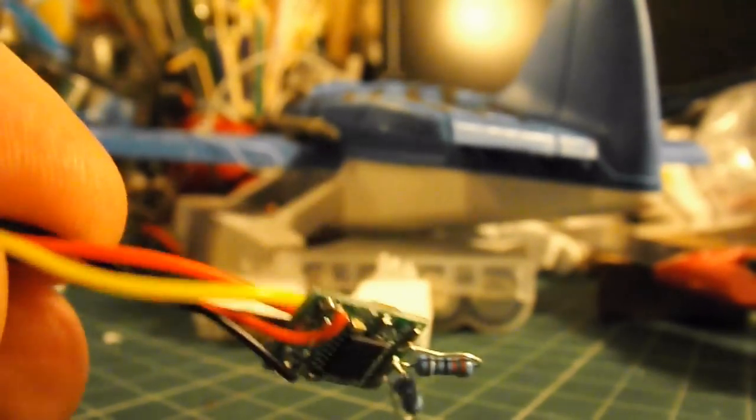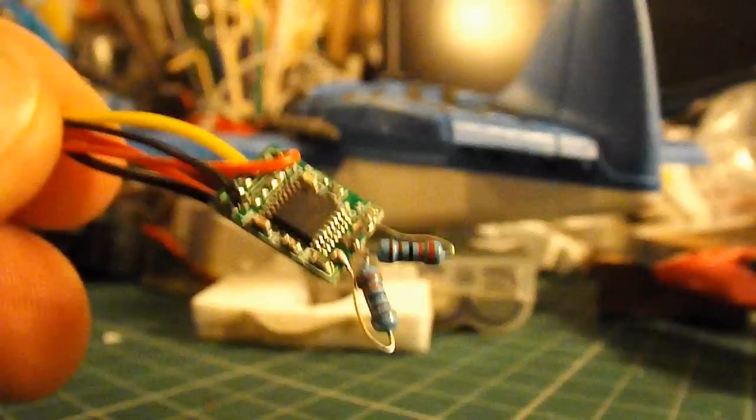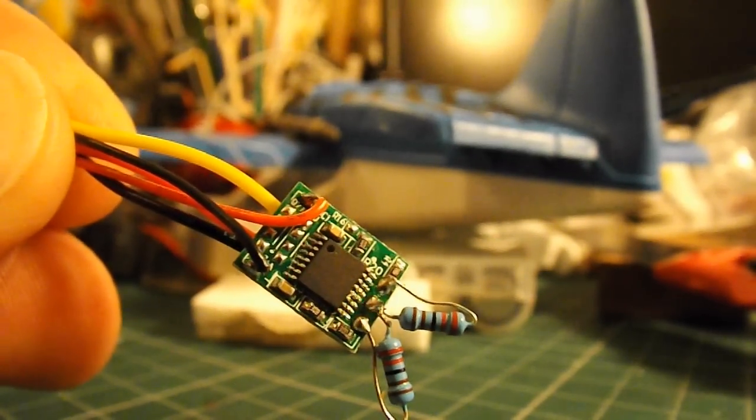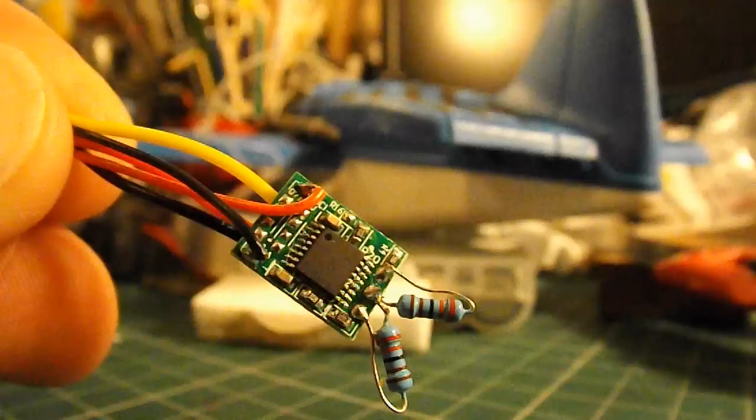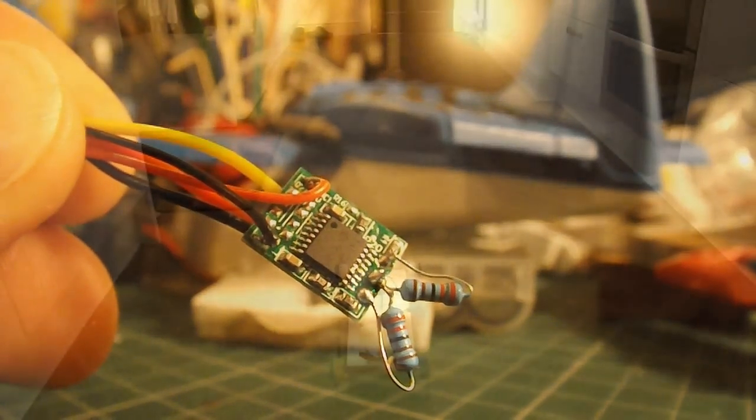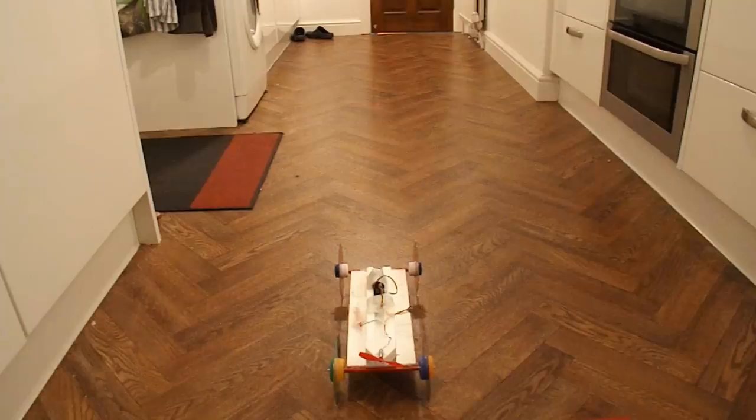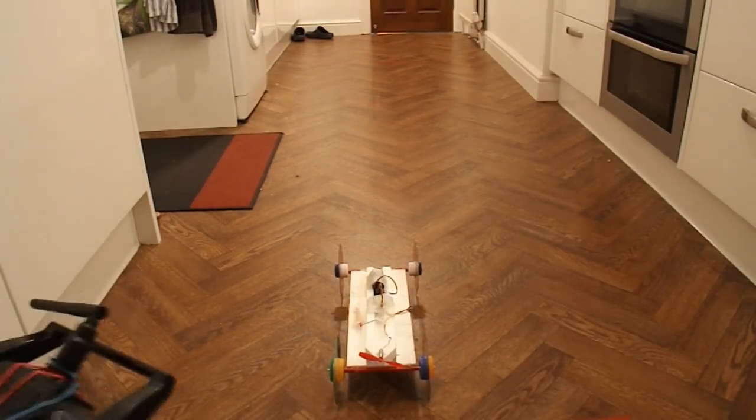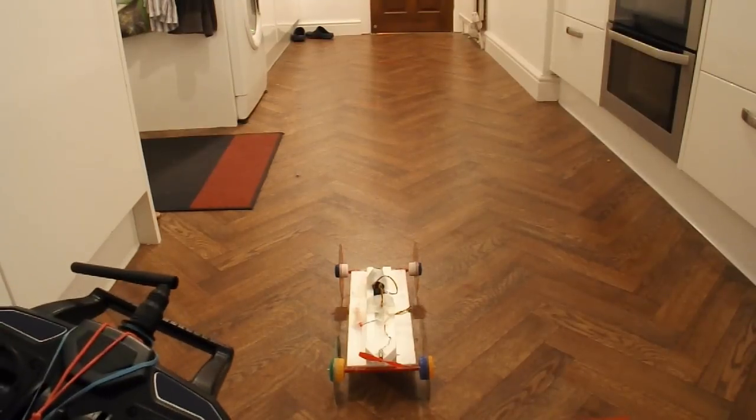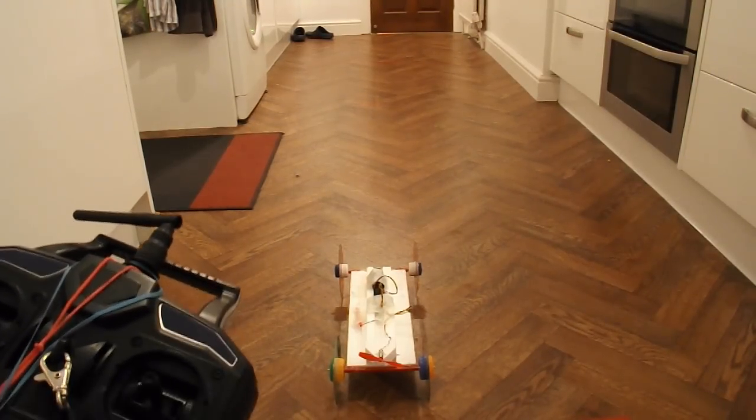I think that's about it. So we'll mount it on one of my rubber band powered cars, but I'll stick a fan motor on it, and we'll give it a try in the kitchen. We've got no steering on it - this is purely to demonstrate using that servo circuit board as a mini ESC.